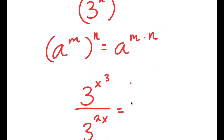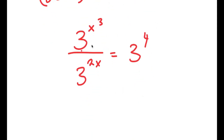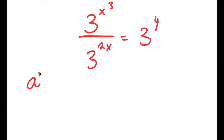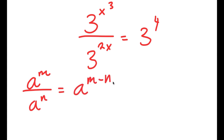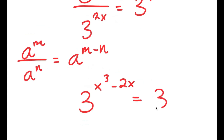This is equal to 81, which I'm going to rewrite as 3 to the power of 4. Now notice how I have everything in the base of 3, which is going to make it much easier to solve. If I have something in the form a to the power of m over a to the power of n, this is equal to a to the power of m minus n. So 3 to the power of x to the power of 3, over 3 to the power of 2x, equals 3 to the power of x³ minus 2x, which equals 3 to the power of 4.